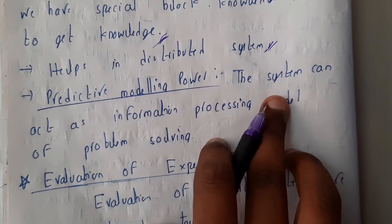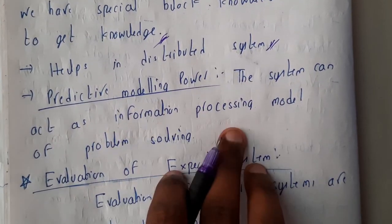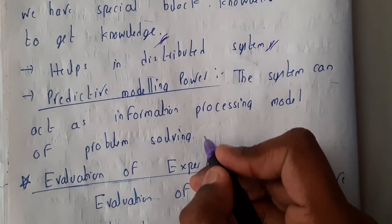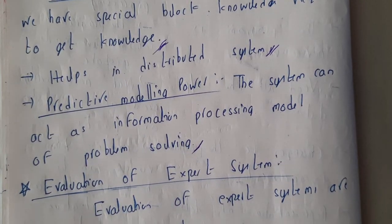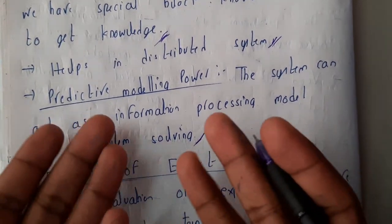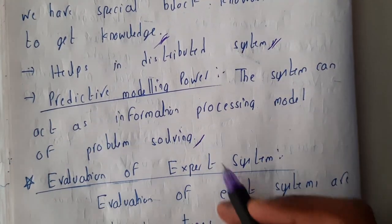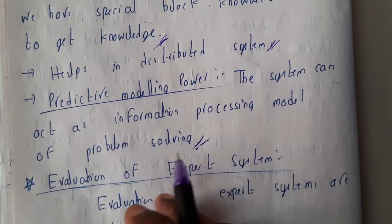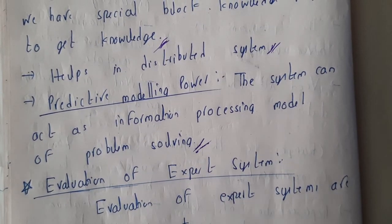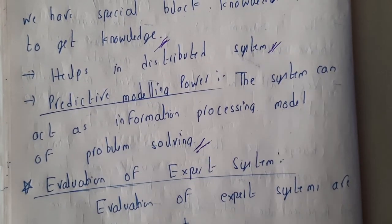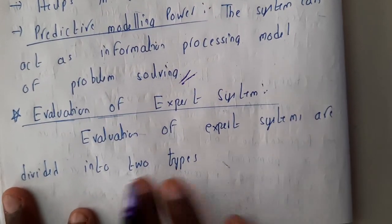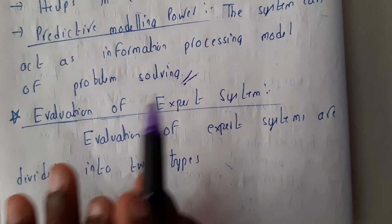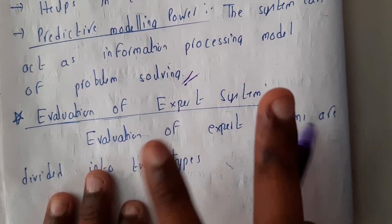The system can act as an information processing model for problem solving. The main use of expert systems is problem solving — it solves problems in an expert and efficient way. Basically, expert systems can be evaluated on certain bases.